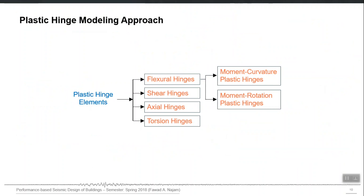Plastic hinge elements are available in ETABS and other programs, which are of several types. Flexural hinges can act in one particular direction of a cross section or another, because there are two moment directions for a three-dimensional element. Similarly, there are two shear directions Vx and Vy, one axial direction along the length of the member, and one torsional direction — the rotation about the axial axis.